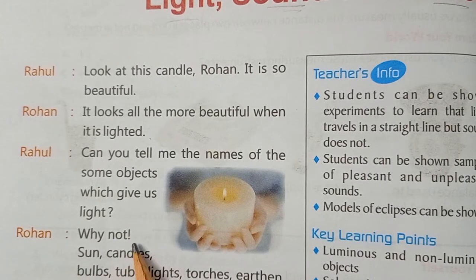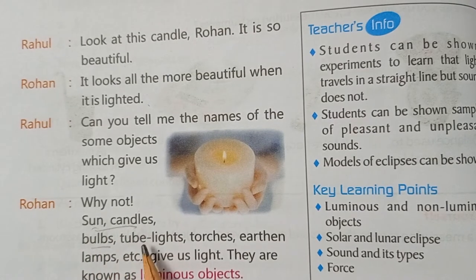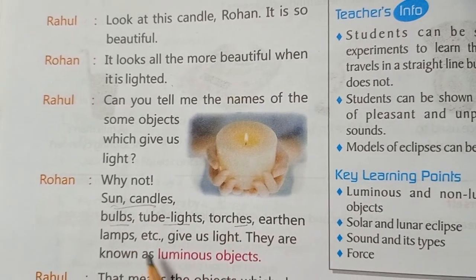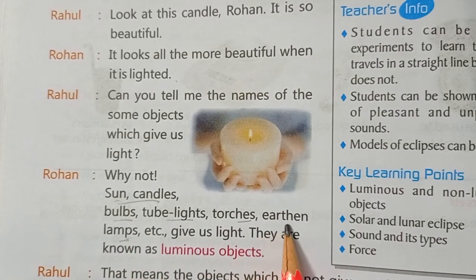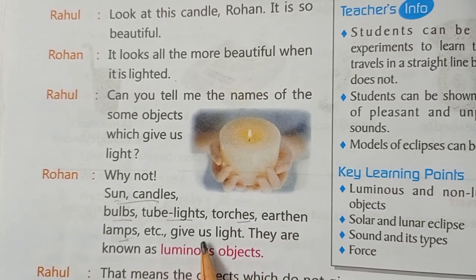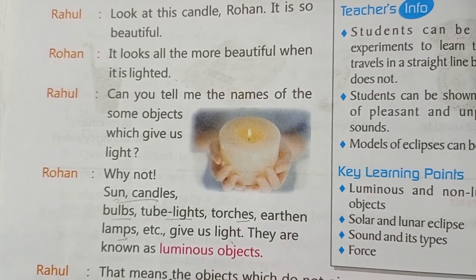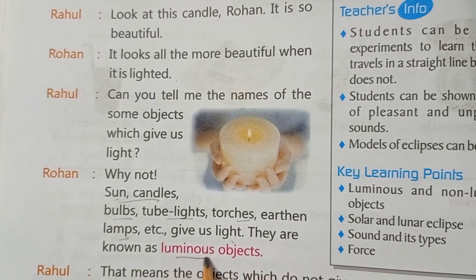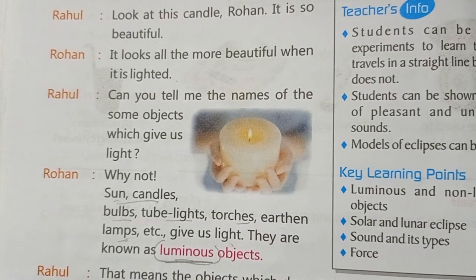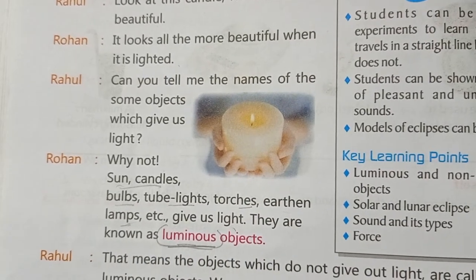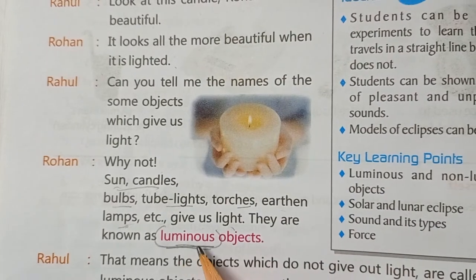Rohan says: 'Why not! Candles, bulbs, tube lights, torches, earthen lamps, chimneys, and so on — these all give us light. They are called luminous objects. Luminous objects are those which give us light — roshni dene wale objects.'